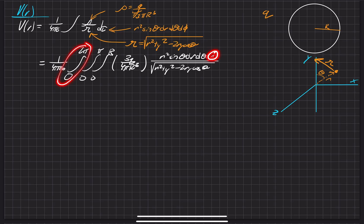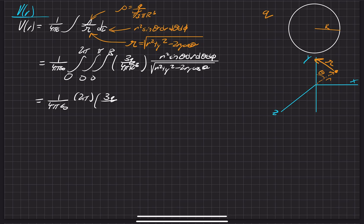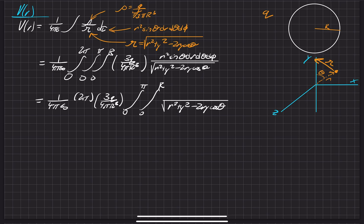The phi integral is a pretty easy one — we're sweeping over the entire axis for phi, so that gives us a factor of two pi on the outside. We'll also move out all the other constants to clean up the integral, leaving us with r squared sine theta in the numerator and dr d-theta in the integrand.